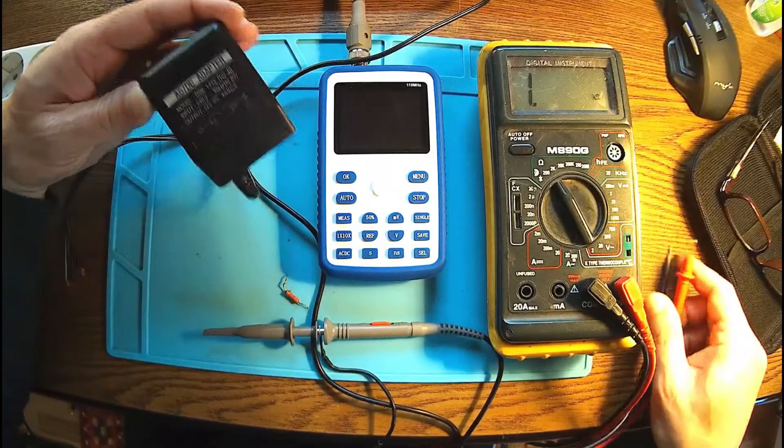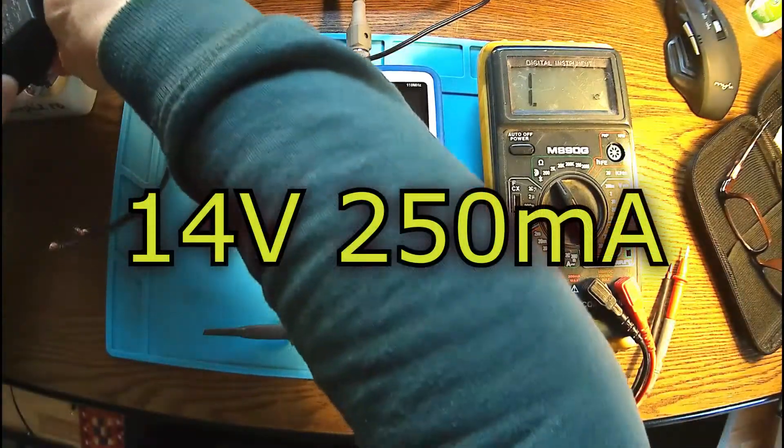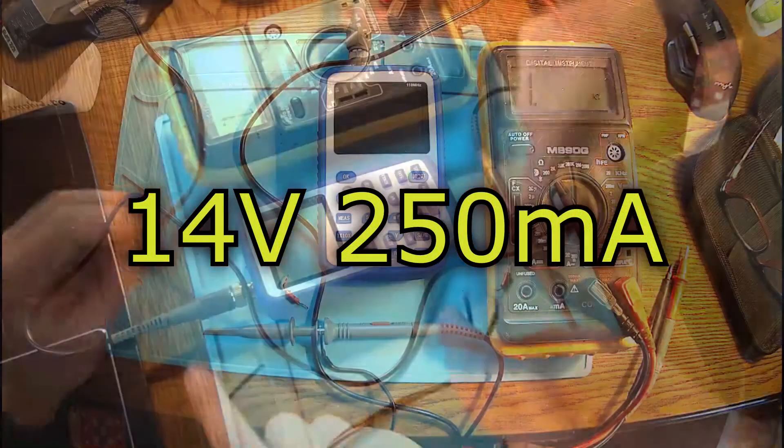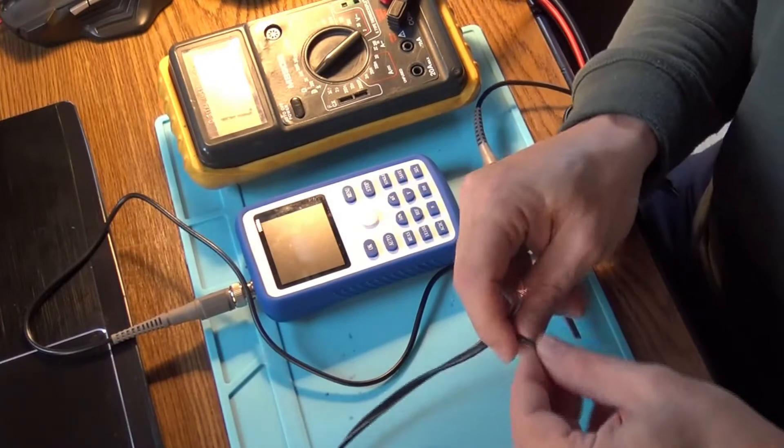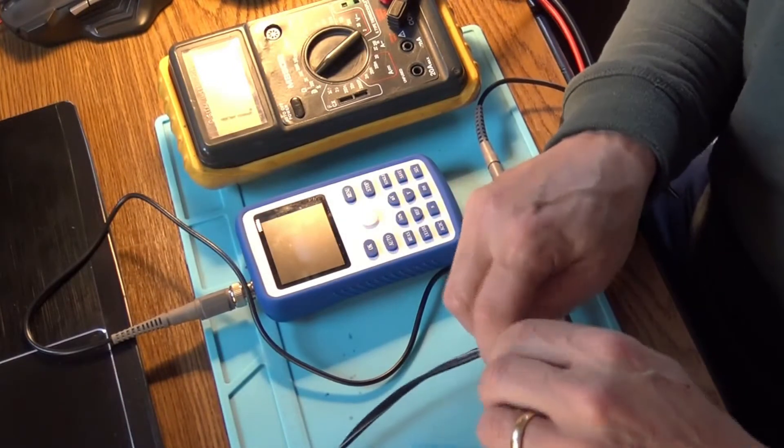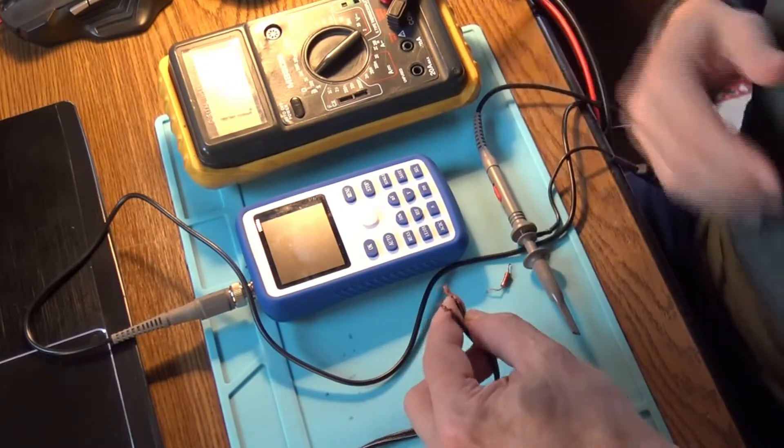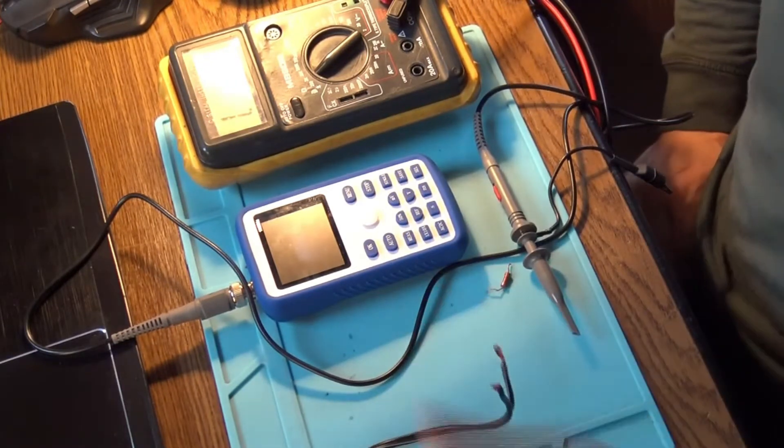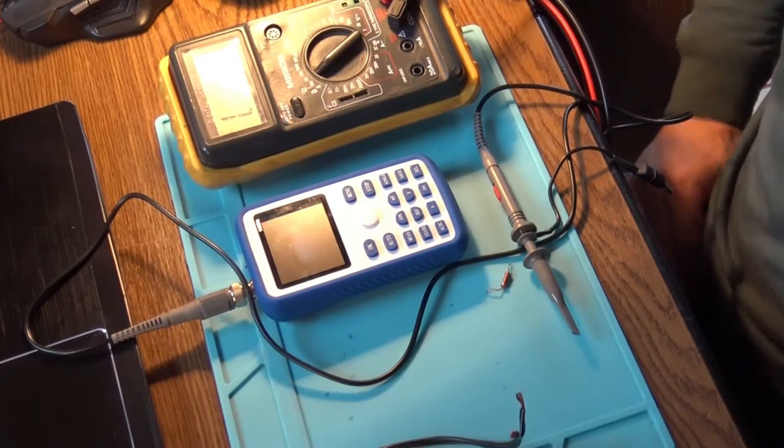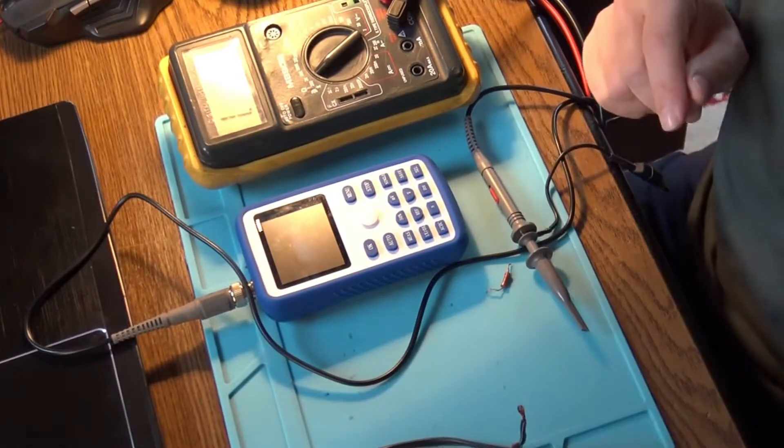We're going to try to see the ripple of this little power supply. It supposedly has a bridge because this is DC out and a capacitance inside there. I'm not sure because this was used for recharging a vacuum cleaner, but it's very possible to have a capacitor.